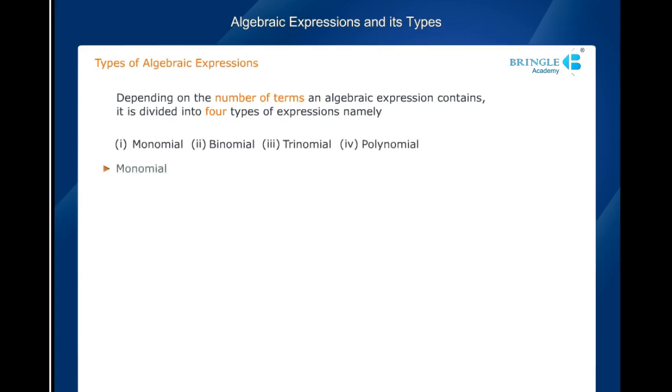Monomial: An algebraic expression consisting of only one term is called a monomial. For example, 5a, -4ab, -5 are all monomials.